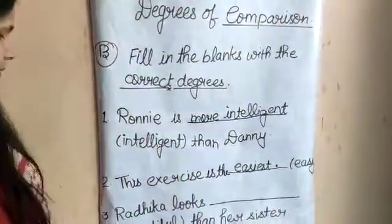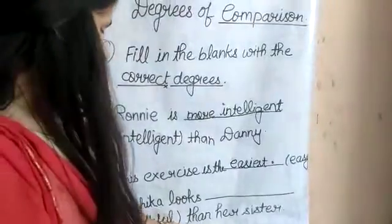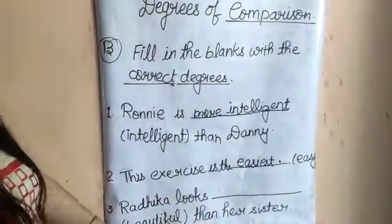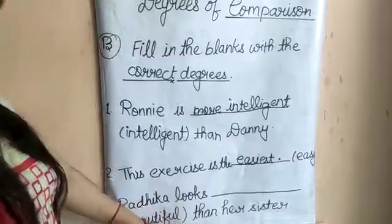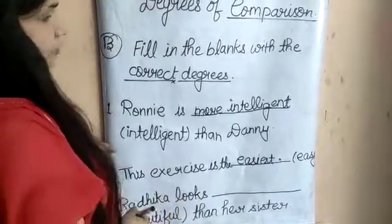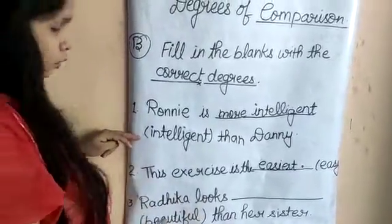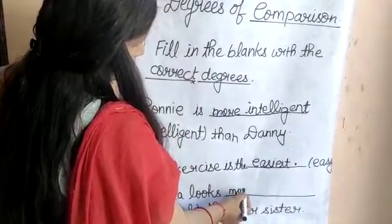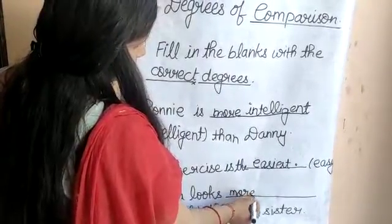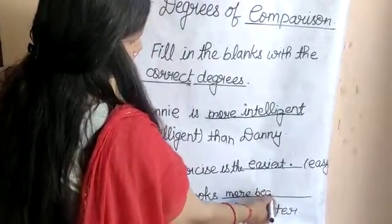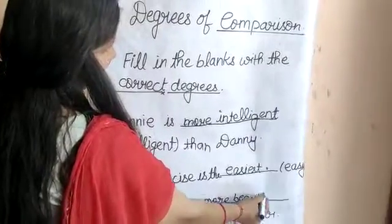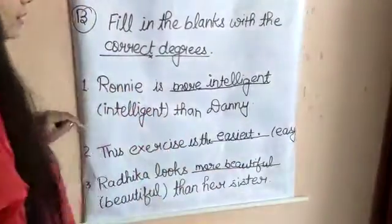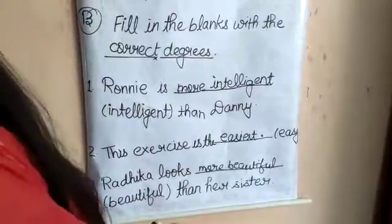Next है: Radifa looks ___ than her sister। यहाँ 'beautiful' दिया गया है और 'than' का use है, इसलिए comparative होगा — 'more beautiful'। M-O-R-E B-E-A-U-T-I-F-U-L।